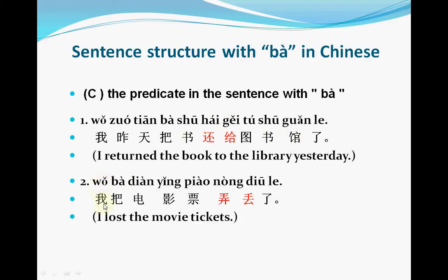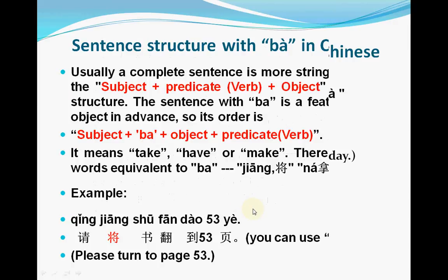Another example: 我把电影票弄丢了. 弄丢 means lost. 弄丢 is the predicate in this sentence — it is a transitive verb. 把 means have. 电影 means movie. 票 means ticket. 弄丢 means lost.